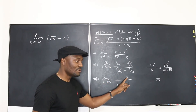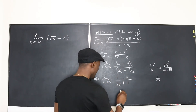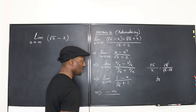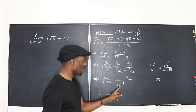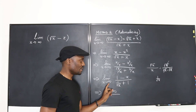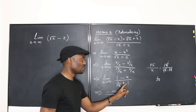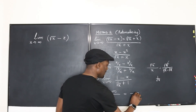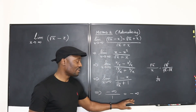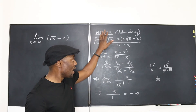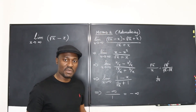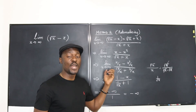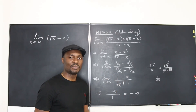As x goes to infinity, x in the numerator goes to infinity, so one minus infinity gives negative infinity. In the denominator, one over square root of x goes to zero as x goes to infinity, leaving zero plus one, which is one. So our answer is negative infinity. This method always works — it may require algebraic manipulation or sometimes L'Hôpital's rule, but the algebra is clean.